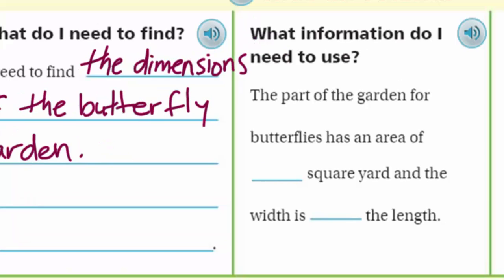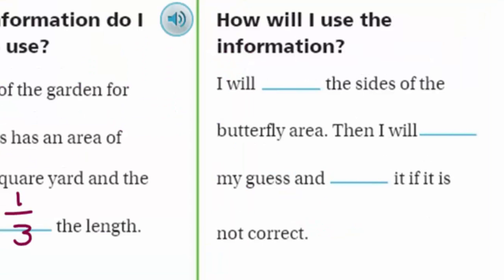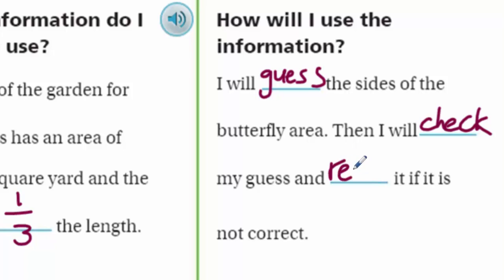What information do I need to use? The part of the garden for butterflies has an area of three-quarter square yard. And the width is one-third the length. How will I use the information? This is the whole purpose of this lesson — we're supposed to use guess, check, and revise. I will guess the sides of the butterfly area, then I will check my guess, and I'm going to revise it if it is not correct.